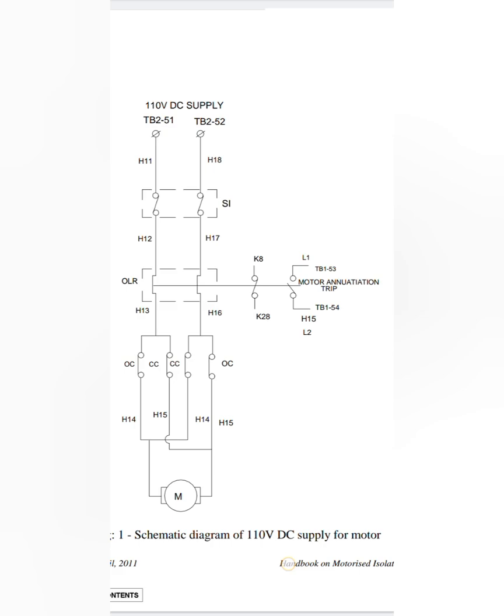Next is your AC supply portion, which means your auxiliary supplies such as heaters, lamps and socket connections in your marshalling board of your isolator. In here the 230 or 240 volt AC supply is controlled by a switch S3 and then enters into your heater, lamp and socket circuits. In each circuit we have separate switches.